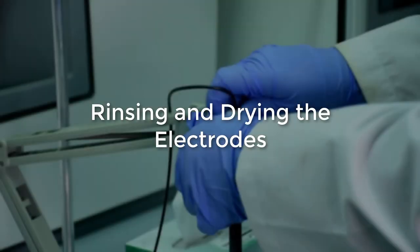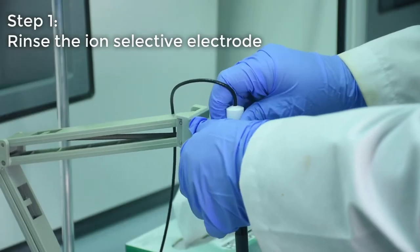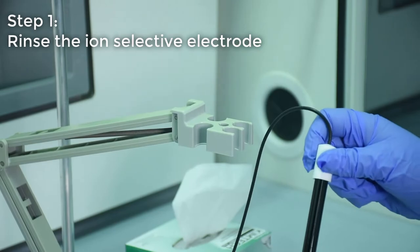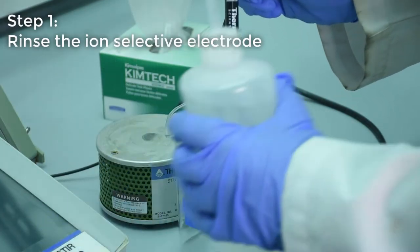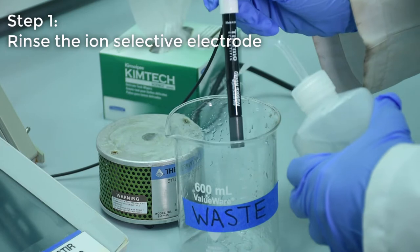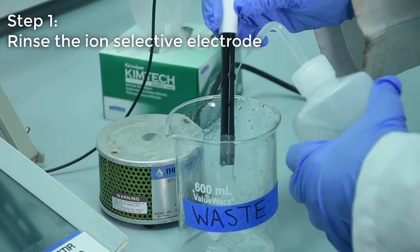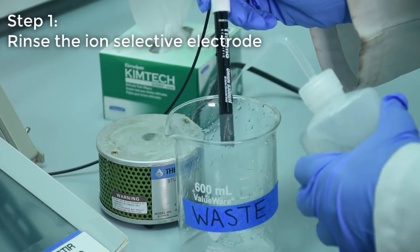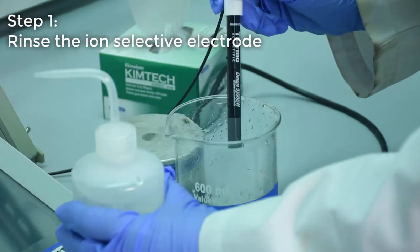Before we immerse the electrodes into the solution, we need to rinse them. Remove the ion selective electrode from the stand. Use a squirt bottle with deionized water to rinse the electrode over a large waste beaker. Rinsing the electrodes minimizes cross-contamination between residual contaminants on the electrodes and our sample.